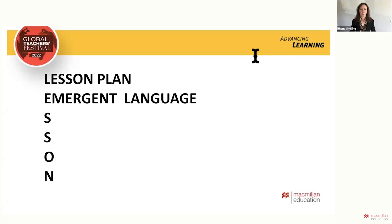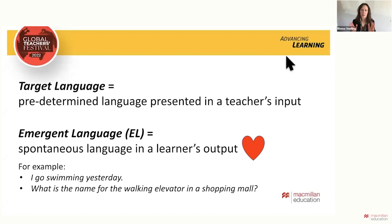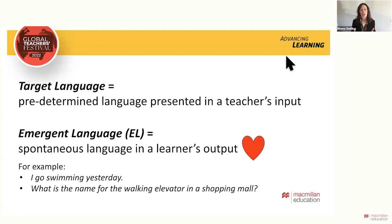E is for Emergent Language. Target language is what the teacher wants students to say - things in the course book contents page, pre-determined language presented in teacher input, or from a needs analysis. Emergent language, in contrast, is what students want to say - it could be a slight mistake, or they know the meaning and concept but don't have the English word. It's spontaneous language in a learner's output. I love emergent language - it's a great way for students to practice, play with, and explore language.